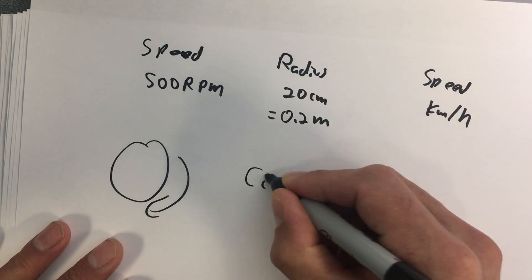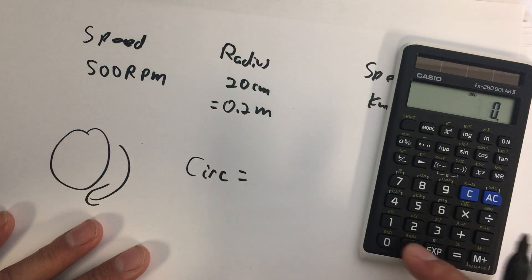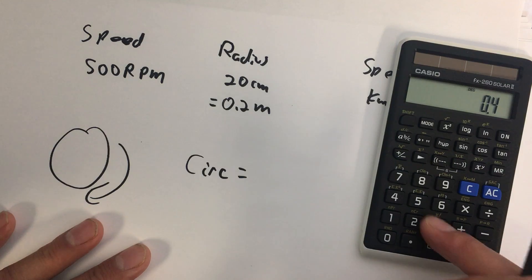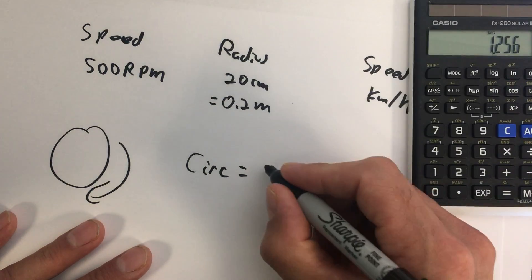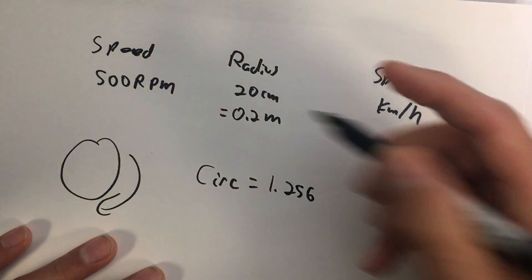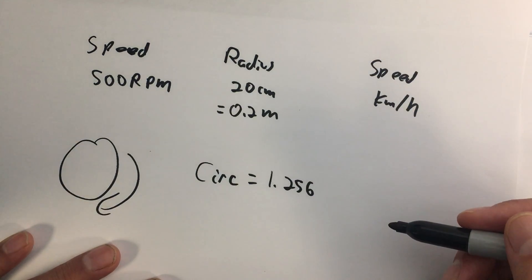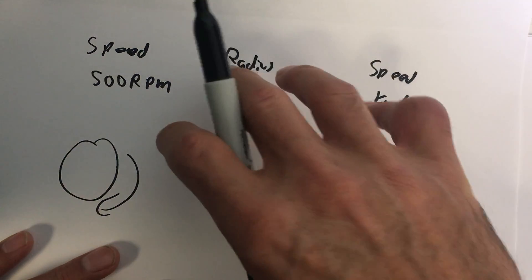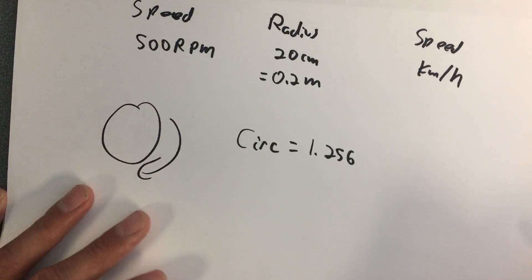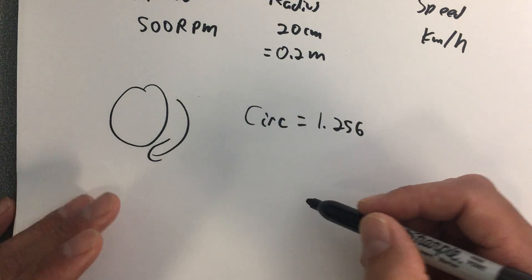The circumference is 0.2 × 2 × 3.14, so the circumference is 1.256 meters. If you have a wheel with a radius of 20 centimeters, the distance around the wheel is 1.256 meters — meaning every time that wheel rotates it goes 1.256 meters forward.